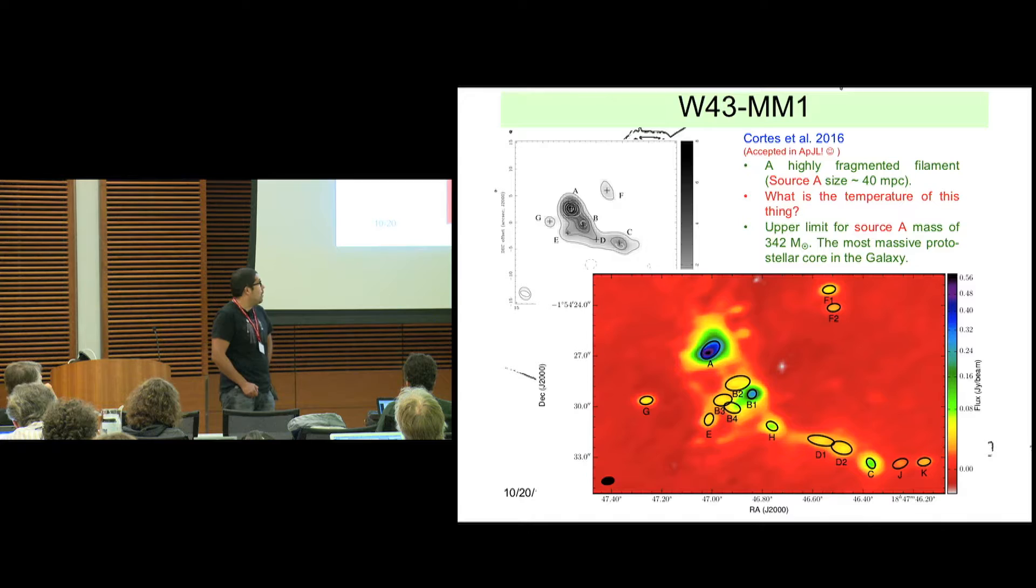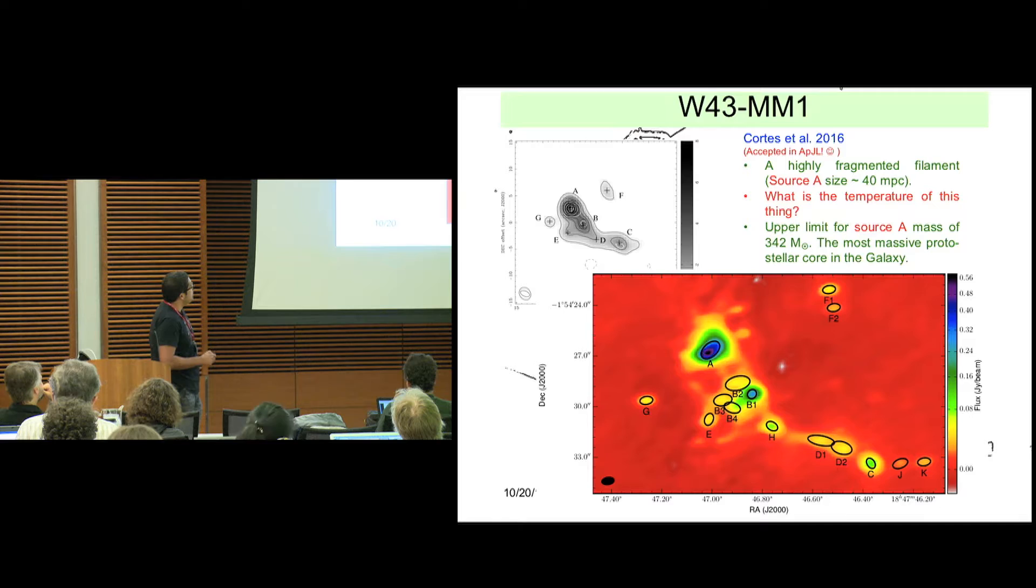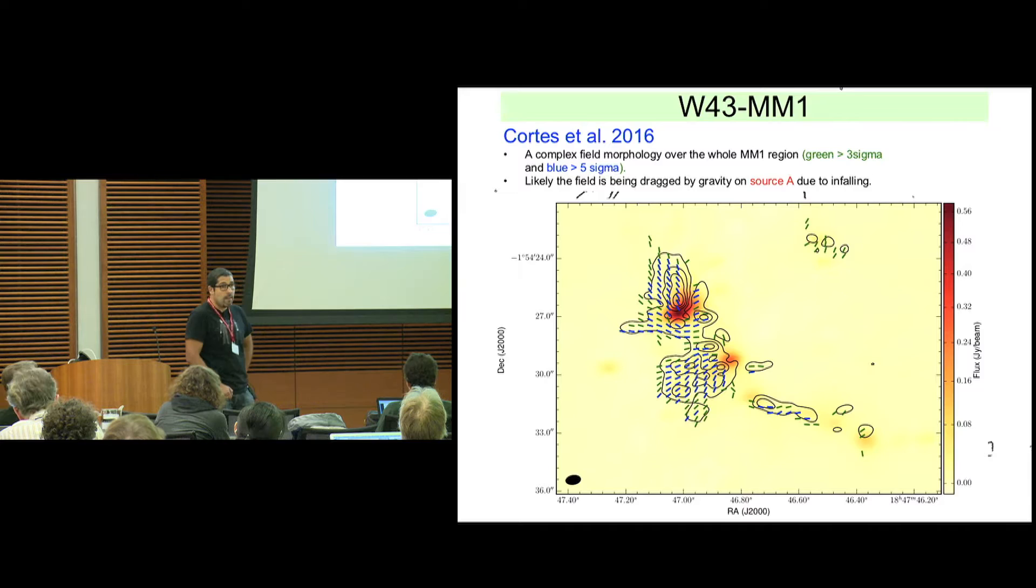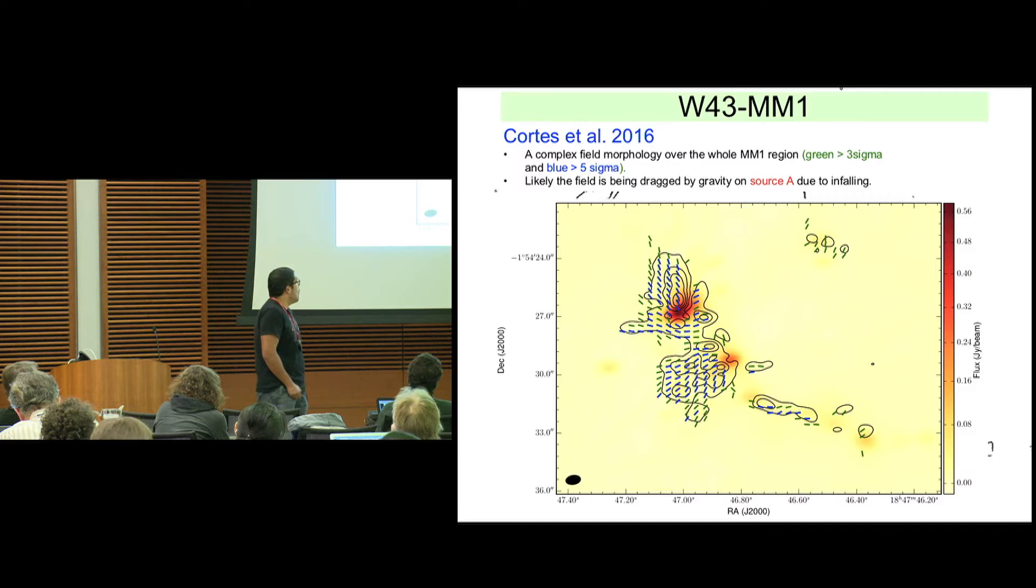So you can compare with the SMA image. I mean, it's quite consistent, but the ALMA detail is quite astonishing. So here's the polarization. This is the magnetic field pattern that we obtain, assuming grain alignment. The polarization vectors are already rotated. It's quite consistent with the SMA. And it's also interesting to analyze.